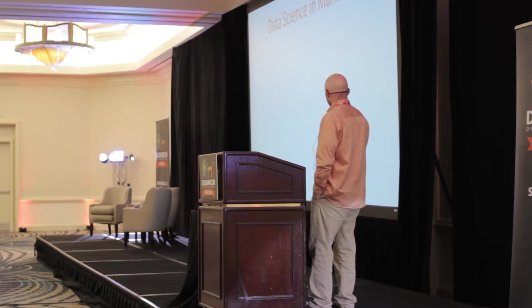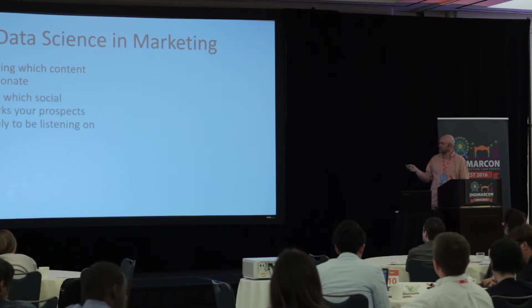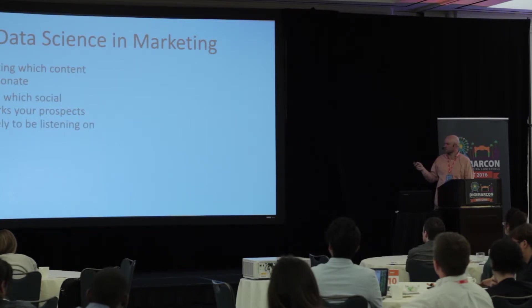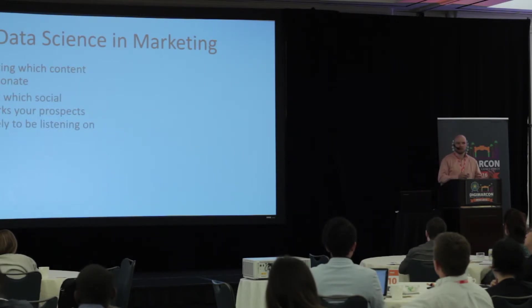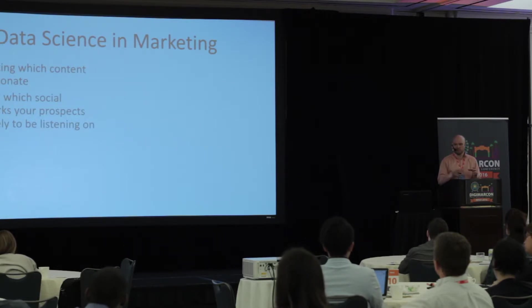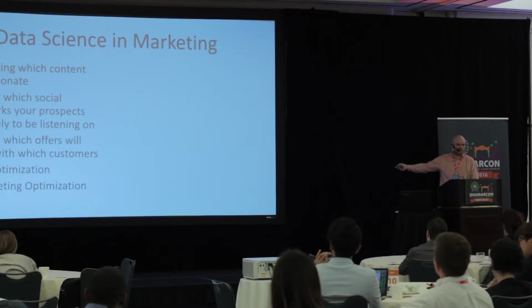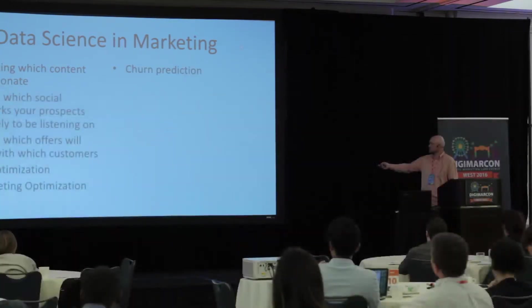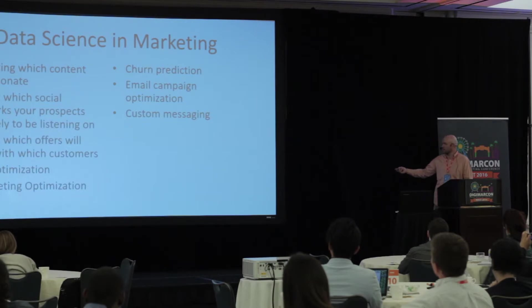Let's get into the heart of it — data science in marketing. You can use data science to predict which content is more likely to resonate, which social networks your prospects are more likely to be listening on. Simple examples involve looking at what has worked in the past. In data science, you're using huge volumes of data and layering one pattern on top of another, looking for intersections. You can predict which offers will work with which customers, apply data science to pay-per-click optimization, retargeting optimization, churn prediction, email campaign optimization, and custom messaging.